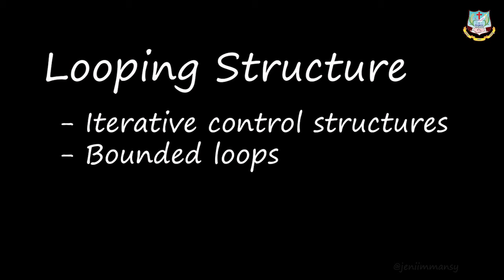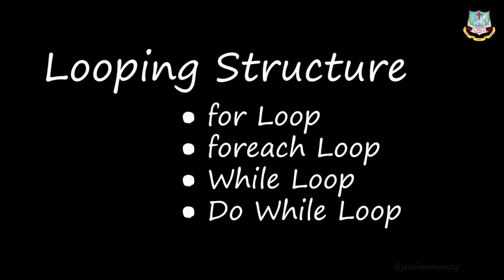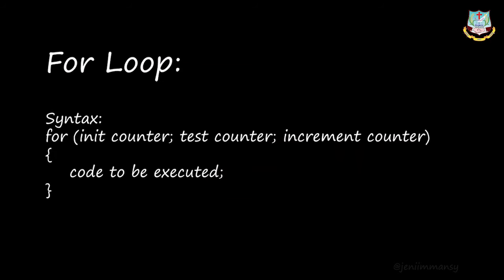Loops that iterate for a fixed number of times will be known as bounded loops. PHP supports four types of loops: for loop, for-each loop, while loop, and do-while loop. First, let's see what is for loop. For loop means when you know how many times the code or block of statements has to be executed, you can use this for loop.